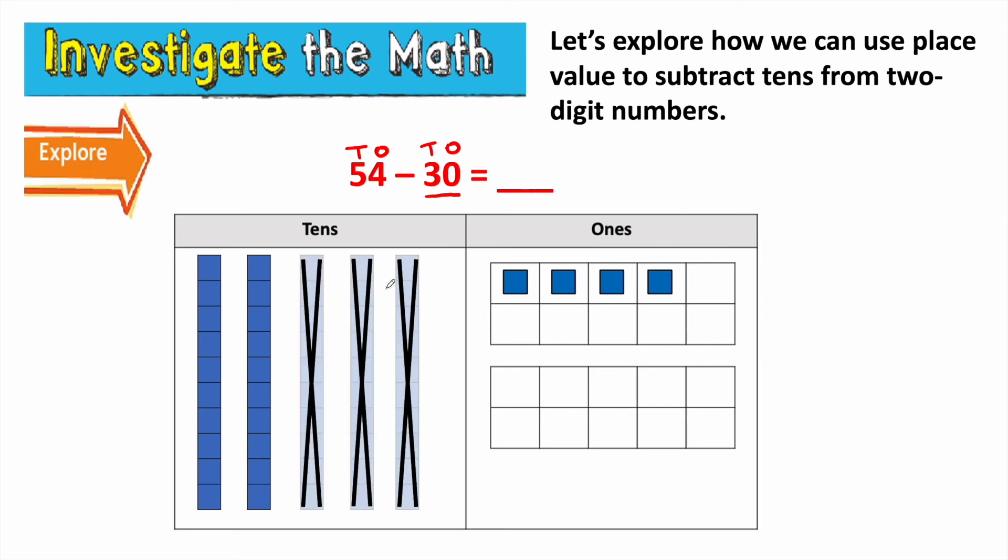Look, I took away three tens. And when I count up what I have left, I see that I have two tens and four ones. Or I could count 10, 20, 21, 22, 23, 24. So when I subtracted tens from tens, I also got 24.